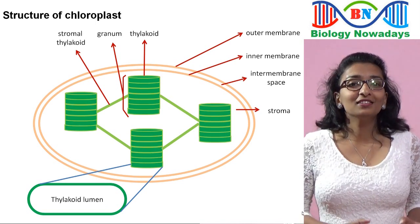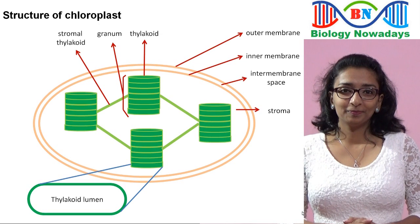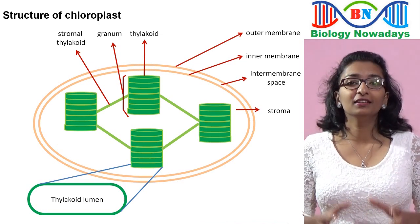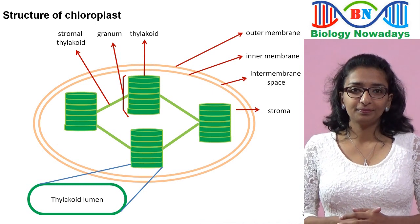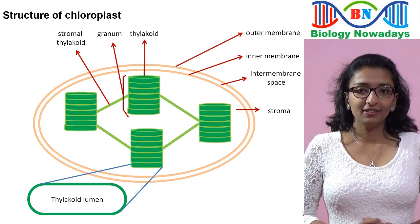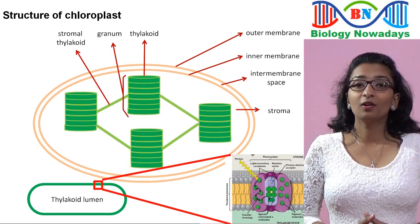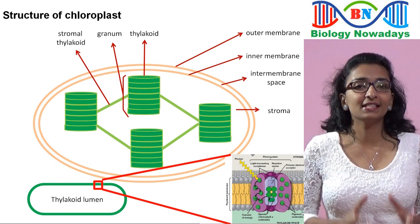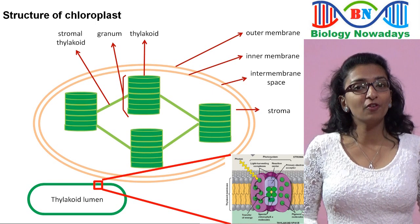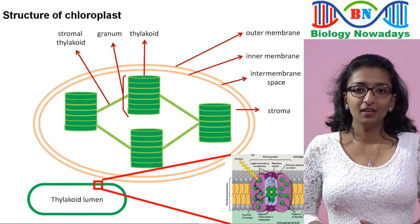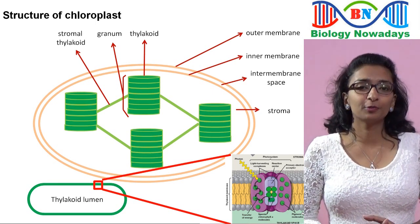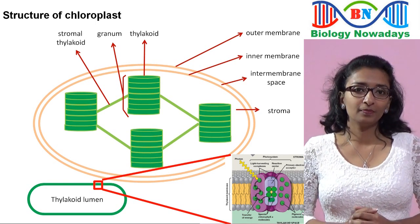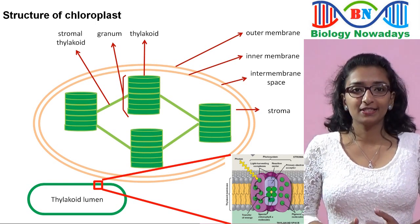Now, where are the photosynthetic pigments located? Chlorophyll and other pigment molecules are embedded in the thylakoid membranes, organized in special units called photosystems. Each photosystem is an assembly of 250 to 400 pigment molecules. There are two different types: photosystem 1 and photosystem 2. We will learn more about photosystems later.